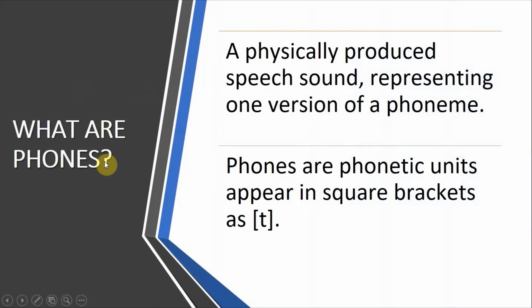Phones are physically produced speech sounds. A phone is a physically produced sound, and it is a phonetic unit. Phonetic units appear in square brackets. So a phone is the physical realization of a sound, while a phoneme is the abstract version.